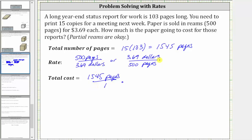To determine which rate to use, remember we want the units of pages to simplify out, leaving us with the total cost. Therefore we will use the rate where we have pages in the denominator, which is $3.69 per 500 pages.